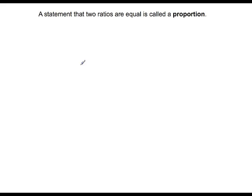A proportion is a statement that two ratios are equal. For example, let's say we have a proportion that says n, some unknown quantity, compared to 21, is equal to 9 to 7. In order to solve for this unknown value, we're going to solve the proportion.